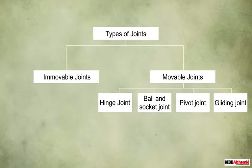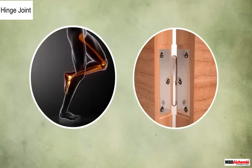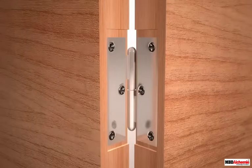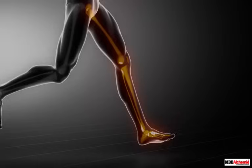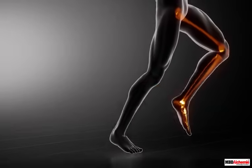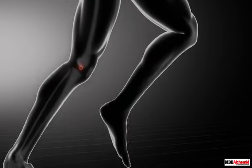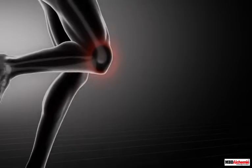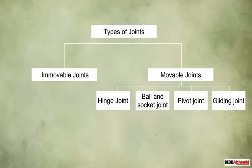Let us first learn about the hinge joint. A hinge joint is very similar to a door hinge. You can see that the door hinge allows the opening and closing of the door in two directions. Similarly, a hinge joint in the body also allows movement in two directions — that is forward and backward, or upward and downward. The elbow and knee joints are the two examples of the hinge joint.